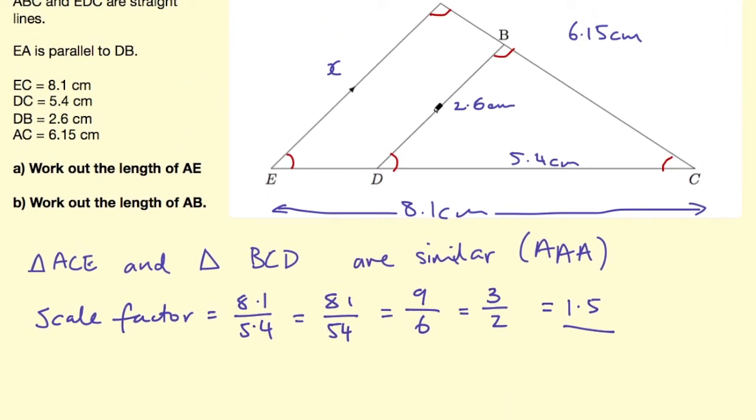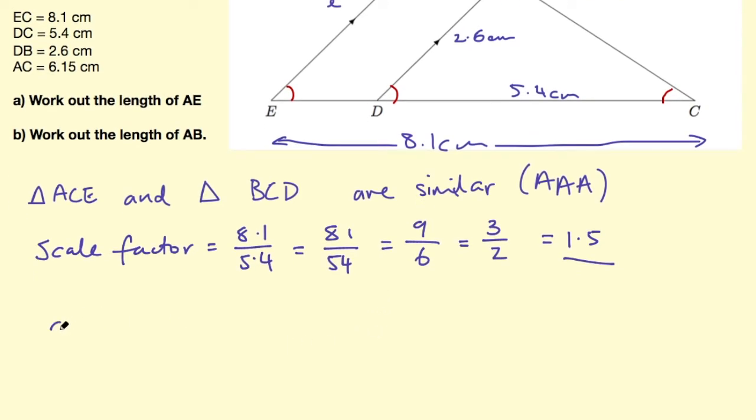So to work out AE I need to multiply this side DB by 1.5, so the operation I need to do is 2.6 times 1.5 to work out AE. This would usually come up in a calculator paper so this is probably going to be a calculator question and you can put that into your calculator and you will get 3.9 centimeters.